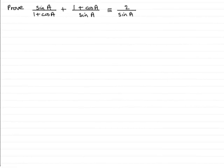Hi. Welcome to this tutorial on proving trigonometric identities. In this example, what we've got to do is prove that sin A over 1 plus cos A plus 1 plus cos A over sin A is identical to 2 over sin A.